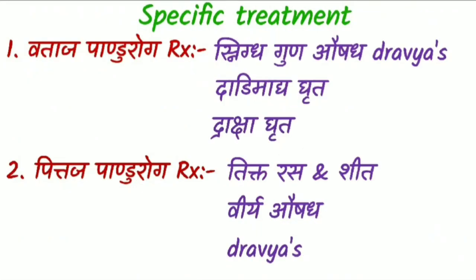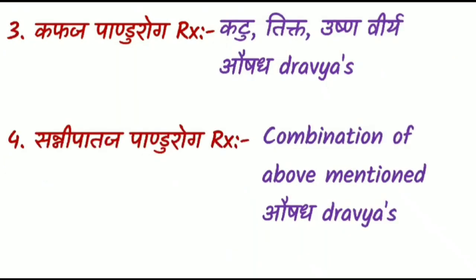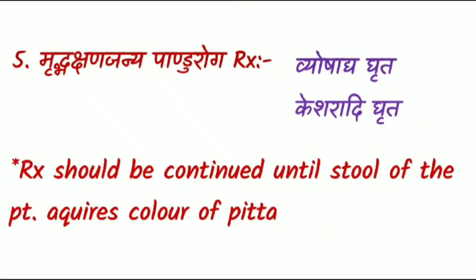Now take a look at the specific treatment. Vataja Panduruga is treated using Snigdha Guna Aushadha Dravyas and Ghrutas such as Dadimadi Ghrutha and Draksha Ghrutha. Pittaja Panduruga is treated by administering Tiktha Rasa and Sheeta Virya Aushadha Dravyas. Kaphaja Panduruga is treated by administering Katu-Tiktha and Ushna Virya Aushadha Dravyas. Sannipataja Panduruga, where all Tridoshas are vitiated, requires a combination of these Aushadha Dravyas. Mrudbhakshanajanya Panduruga is treated by administering Yashada Ghrutha or Keshara Ghrutha after proper Shodhana.